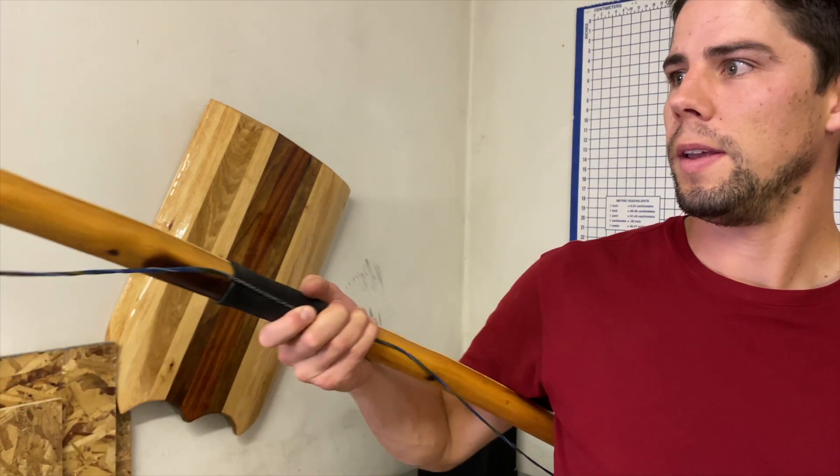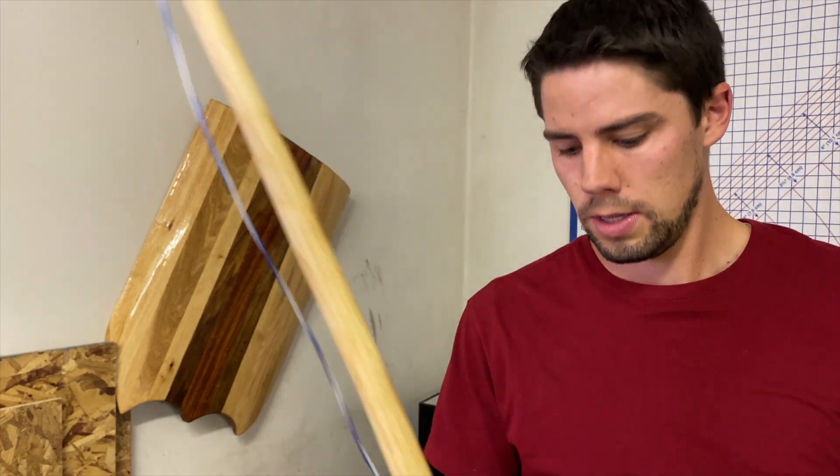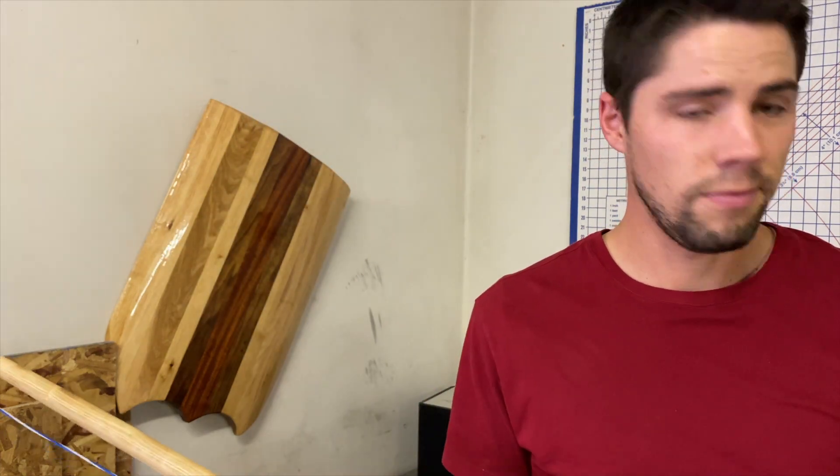But the main thing is kind of what I talked about in that last video. It was all to do with the deflex and the set of the bow. This piece of ash has almost none, and this piece of yew has a lot. So let's go ahead and show those and see the differences in that.